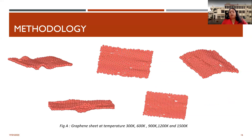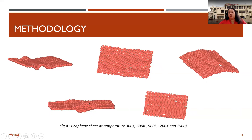Using OVITO software, the atomic configurations at temperatures 300, 600, 900, 1200, and 1500 Kelvin were visualized. You can see the graphene sheet structure changing as temperature increases, and holes appearing in the structure at higher temperatures.